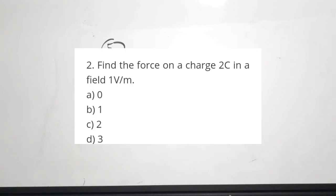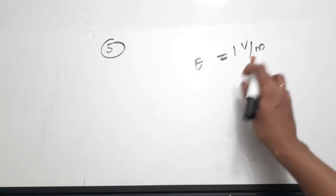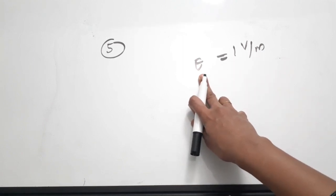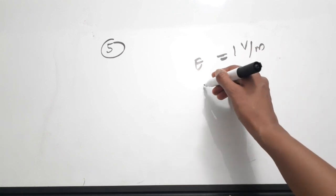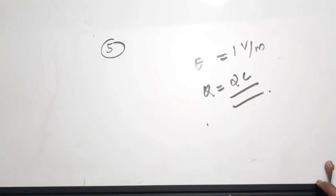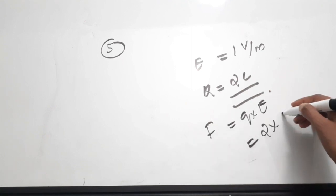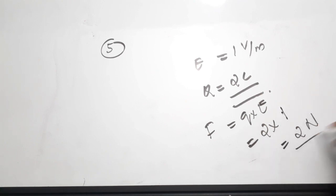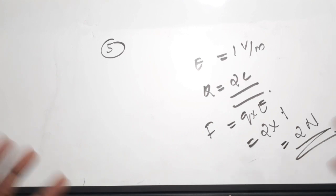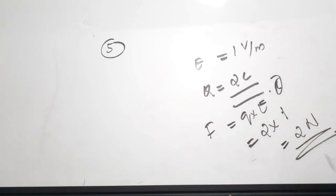Fifth question: find the force on a charge of 2 coulombs in a field of 1 volt per meter. The electric field E = 1 V/m and Q = 2 coulombs. The force on a charge placed in an electric field is F = Q × E = 2 × 1 = 2 newtons. The correct answer is option C: 2 newtons.